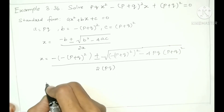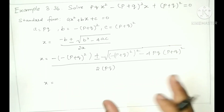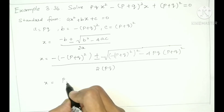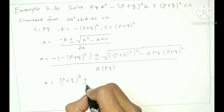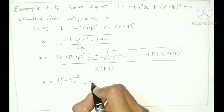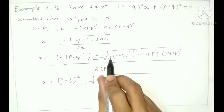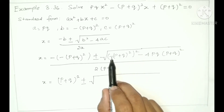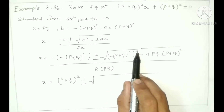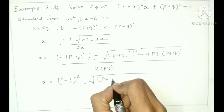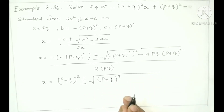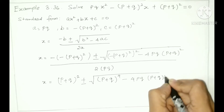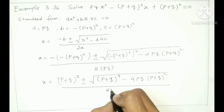So now we have X = (P+Q)² ± √[(P+Q)⁴ - 4PQ(P+Q)²] / 2PQ. Inside the root we have (P+Q)⁴ - 4PQ(P+Q)². We can take (P+Q)² common from the terms inside the root.